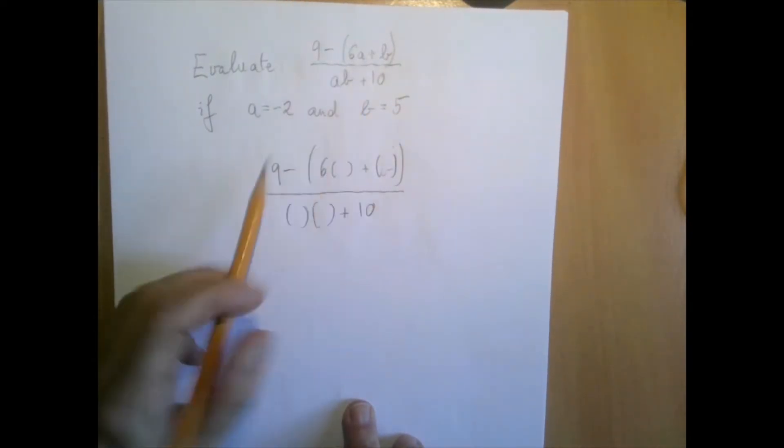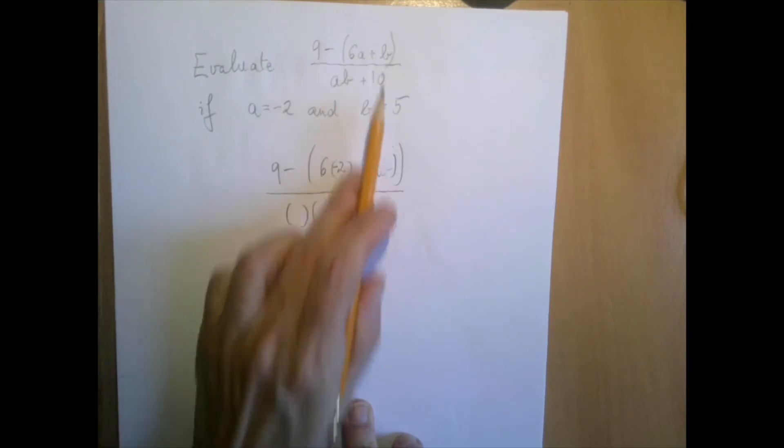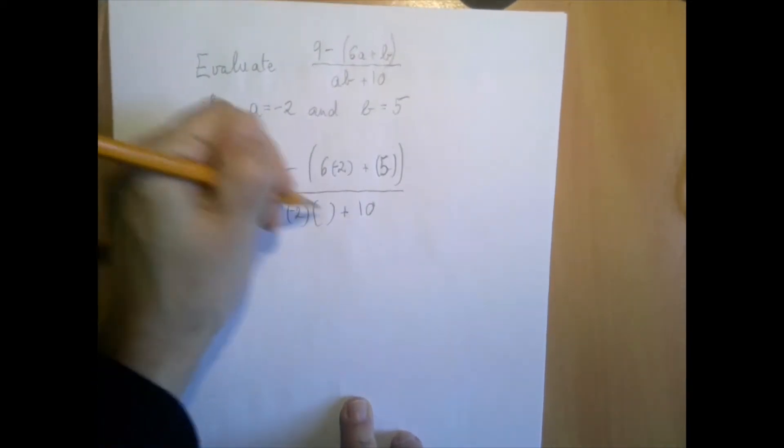So this parentheses stands for a, a is negative 2, and this parentheses stands for b, and b is 5, and then this is a, and this is b, so negative 2 and 5.